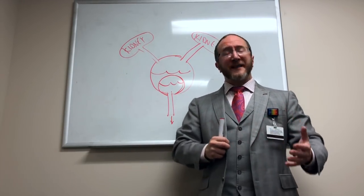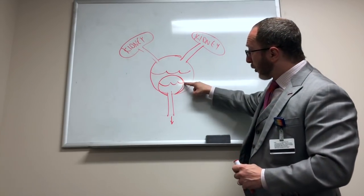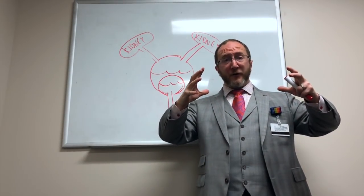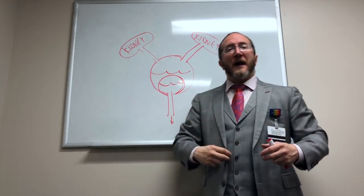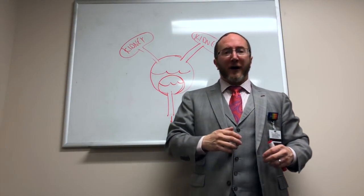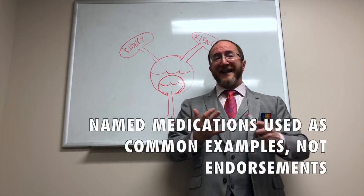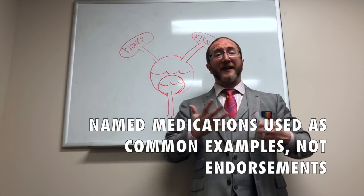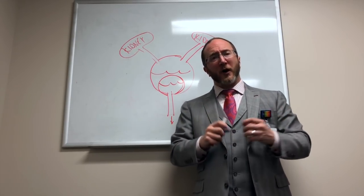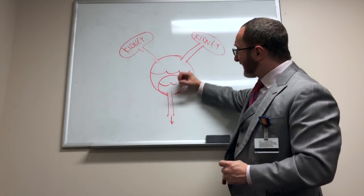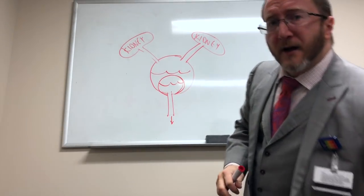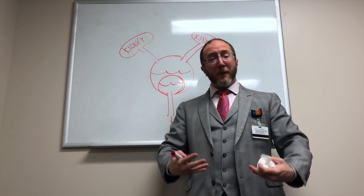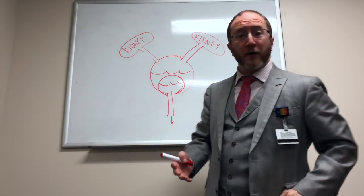There are medicines that work here to allow the bladder to reach its normal size. These are anticholinergic drugs like Detrol, Ditropan, Sanctura, etc. We take those drugs to expand the bladder so that it can be a normal size and have a normal capacity to hold a normal amount of urine.